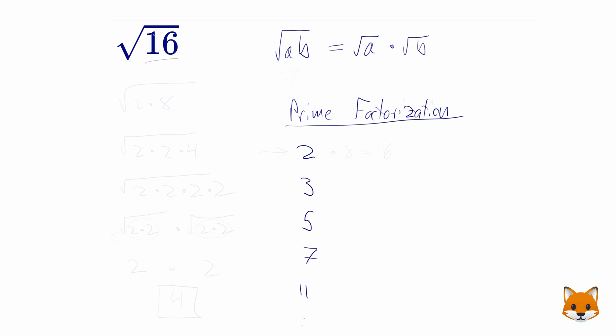So our job is to see, can 16 be rewritten as a series of primes multiplied together? And the way to do that is simply start at the top of this list and work your way down. Can 16 be divided by 2? Why yes, it can, because 2 times 8 is equal to 16.